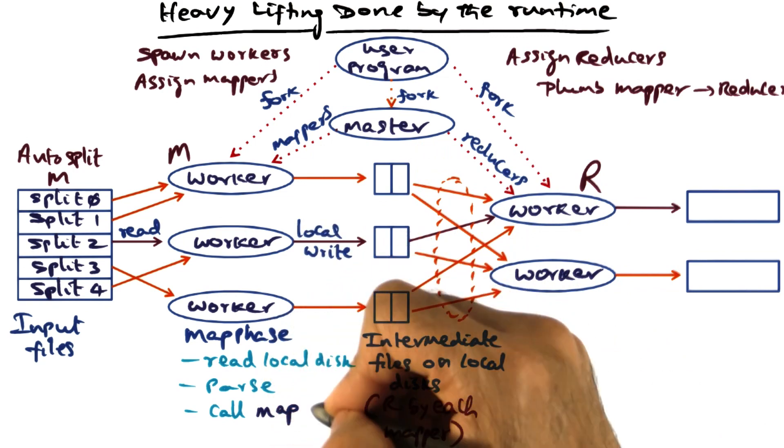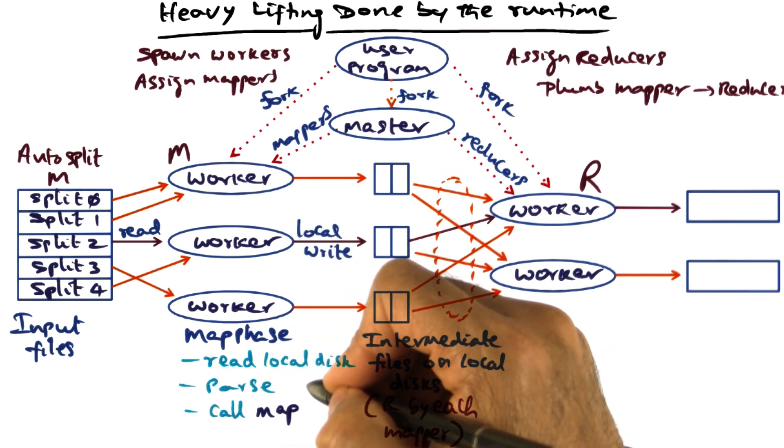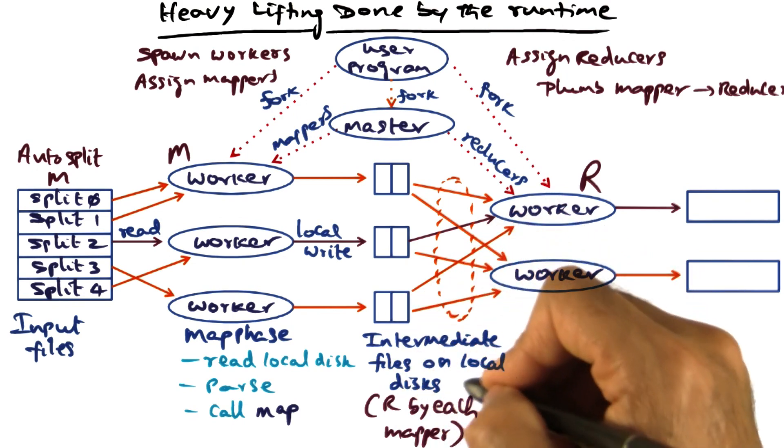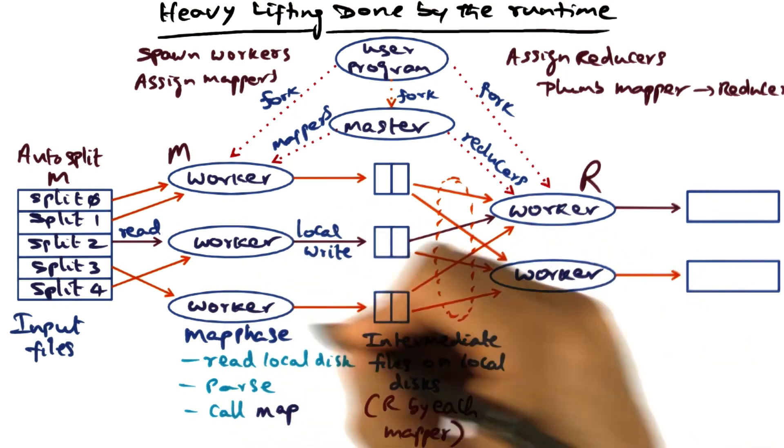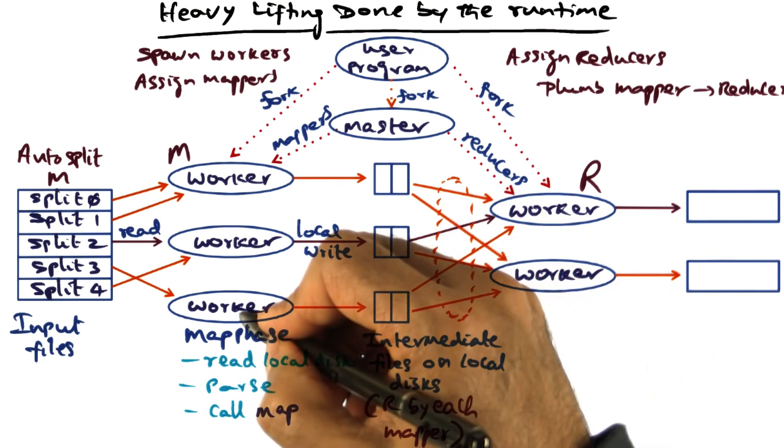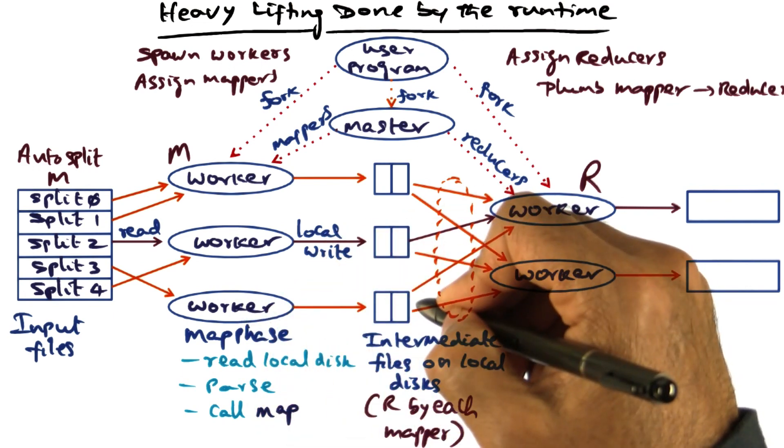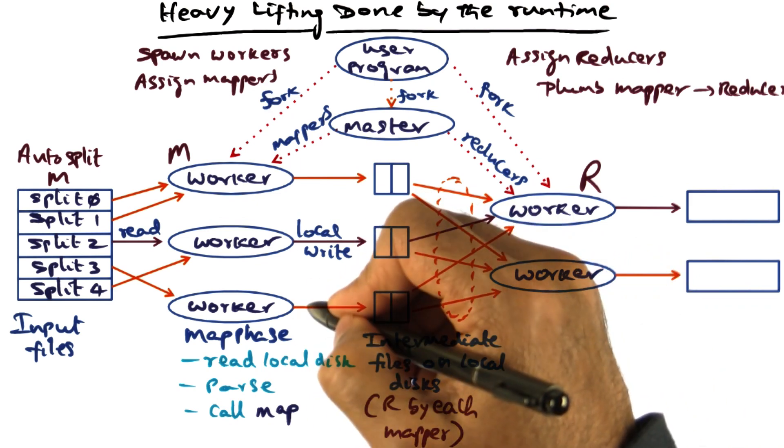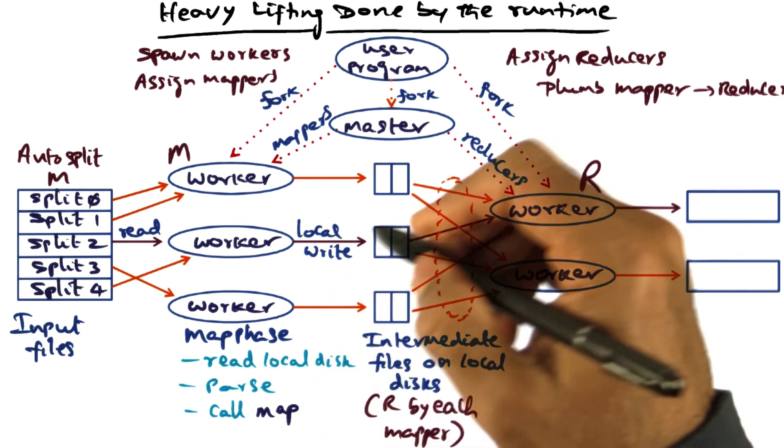Periodically, the intermediate results are going to be written to files which are on the local disk of the worker. For this guy, on its local disk, it's going to write the intermediate files corresponding to the output of the map function.